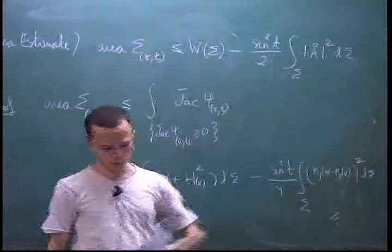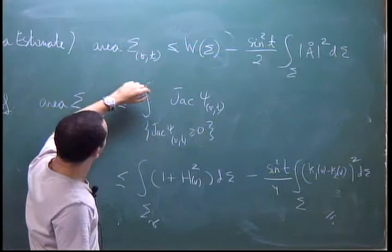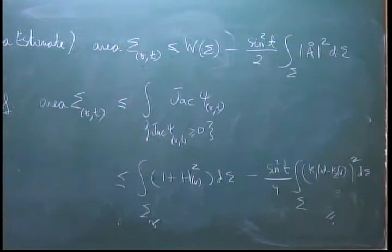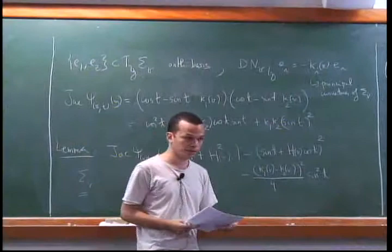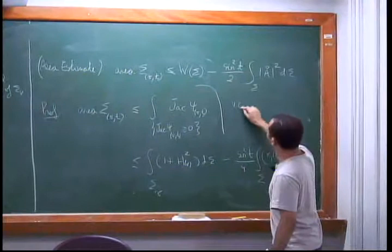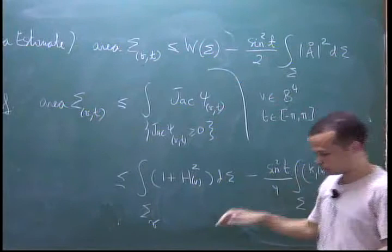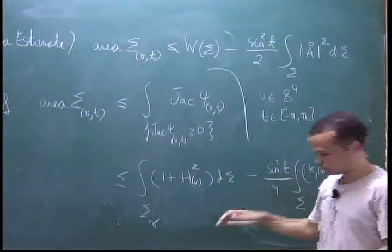The important point is that we have this five-parameter family of rectifiable subsets such that the area of each surface is bounded naturally by the Willmore energy of the original surface. Our idea was to apply minimax to this family. But this family is only defined for V in the open unit ball and T in (−π, π). We need to analyze what happens to the family as V goes to the boundary, because in order to do minimax, we need a family defined on a compact set.